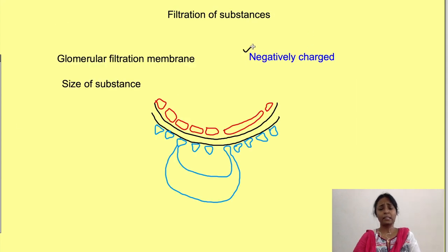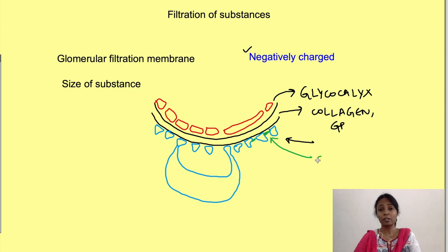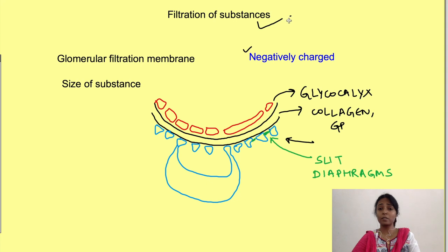All three layers are negatively charged. The endothelial layer has a glycocalyx; the basement membrane is composed of collagen and glycoproteins, which are negatively charged; and the foot processes of podocytes have negatively charged proteins in the spaces between them, known as slit diaphragms. So two things determine filtration: the charge and the size of the substance.